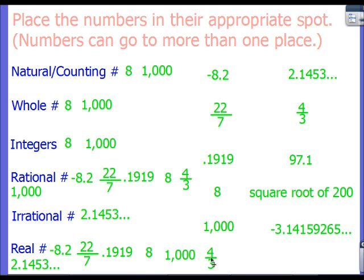All right, we got 97.1. Okay, decimal that stops. So we know that it's rational.